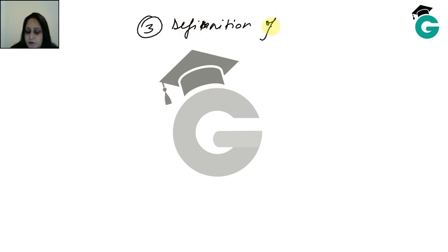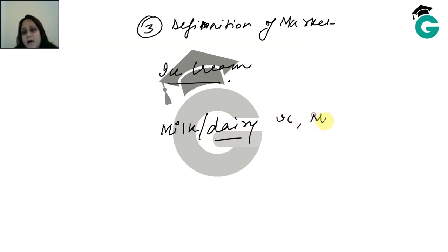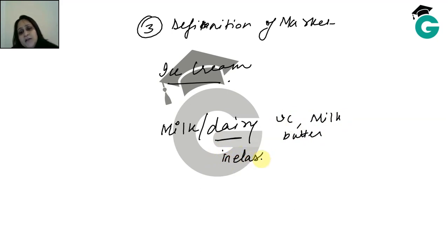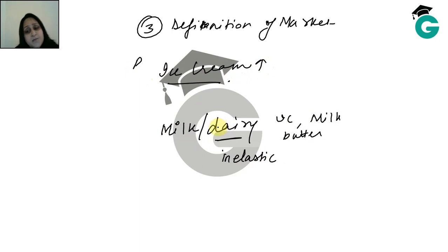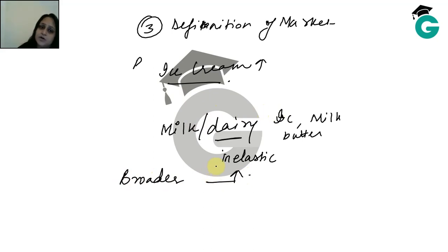The third determinant is the definition of the market. If we talk about ice cream as one product, its demand is more elastic — if prices rise, people can switch to chocolates or something else. But if we talk about all dairy as a category — ice creams, milk, butter, cheese, yogurt — it's hard to reduce everything. So the broader the market definition, the more inelastic it is; the narrower the market, the more elastic it is.